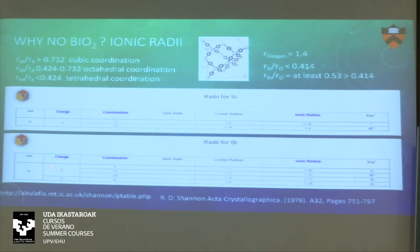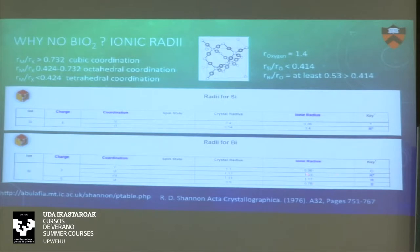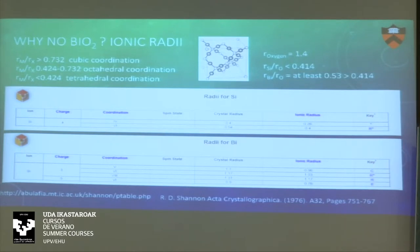However, bismuth is only listed as 3+ and 5+ — you can't look up 4+. Even if you take the smallest radius reported for bismuth 5+, which is 0.76 Å, you get a ratio of 0.53 — larger than the tetrahedral limit. There's no way you will ever fit any bismuth cation in a tetrahedral — it's just not going to fit. Whatever you make will have at least octahedral coordination.